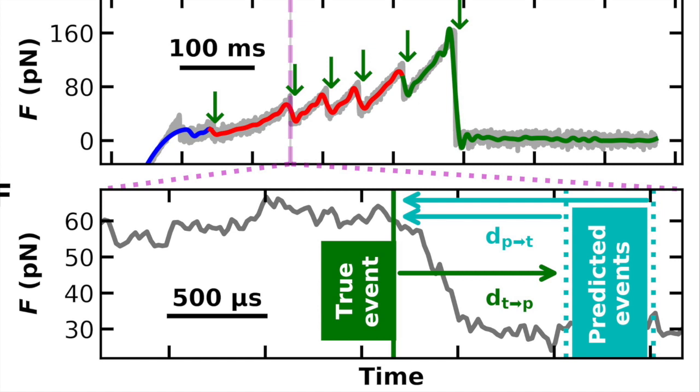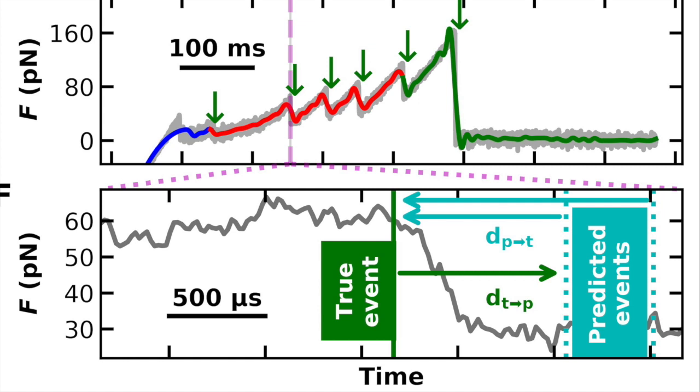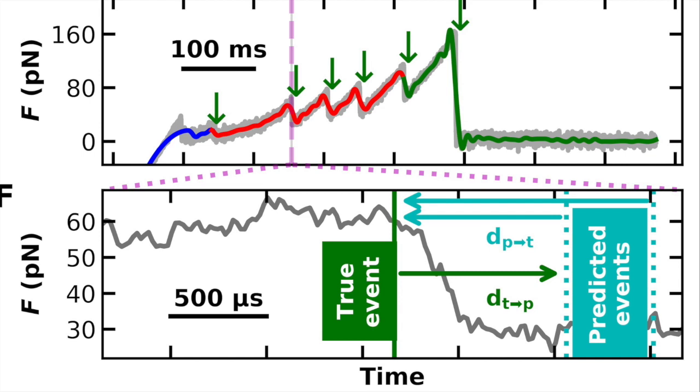And what the rest of this paper really shows is that Feather does a good job of predicting events that are very close to what a human would, and doesn't have very many false positives. And in addition, Feather's really good at reproducing the distribution of loading rates and rupture forces, which means using it should yield a very accurate energy landscape parameter estimation, compared to what a human would do.